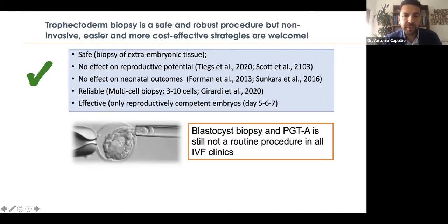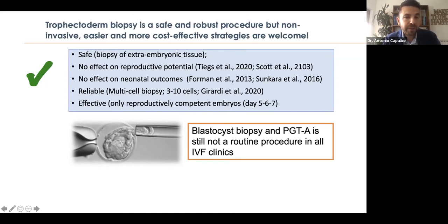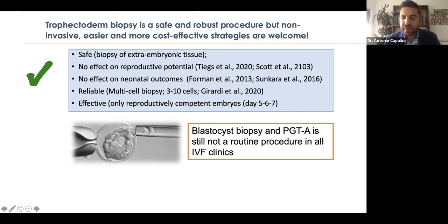We are quite satisfied with the current gold standard method, which is a diagnostic approach with a remarkable predictive value for pregnancy. We know that the biopsy at blastocyst stage is safe and does not impair reproductive potential, as shown in several class one studies. There is also evidence of no adverse neonatal outcomes following the biopsy. We can analyze a multi-cell biopsy, making the genetic analysis extremely robust in predicting chromosomal constitution of the embryos, as long as we use proper criteria for aneuploidy classification and do not overcall mosaicism. This method is also clinically effective, supported by RCTs and case-control studies.